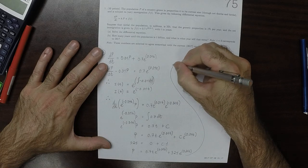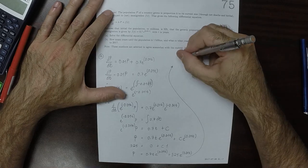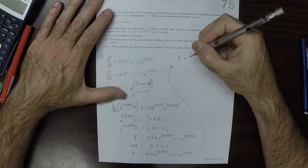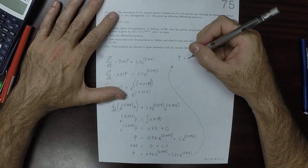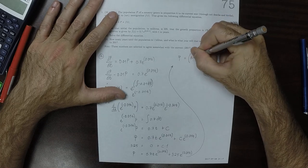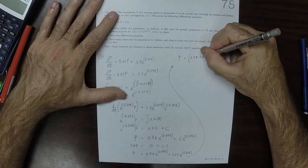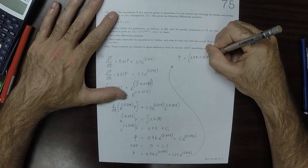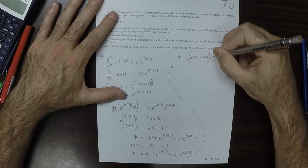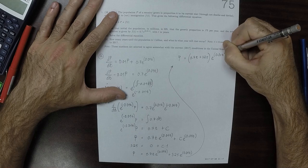So this could be simplified a little bit to obtain that p = (0.7t + 325) times e^(0.01t).